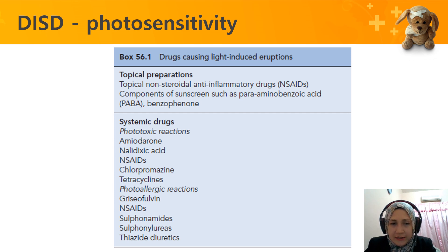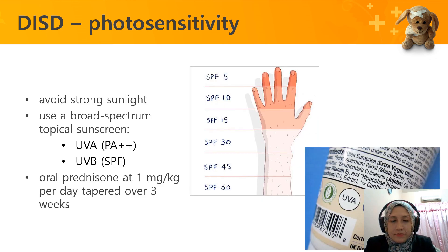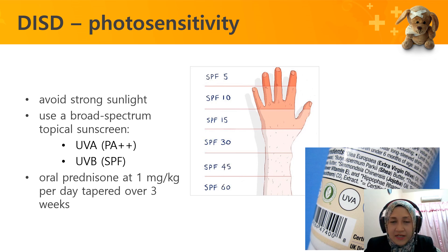Examples of drugs that can cause photosensitivity reactions include topical NSAIDs, amiodarone, NSAIDs, chlorpromazine, and tetracycline.